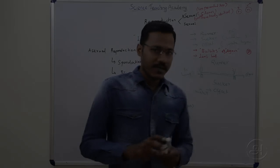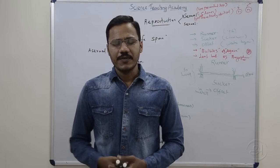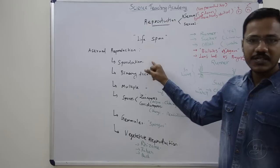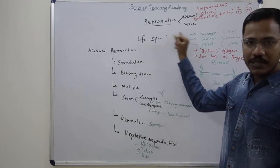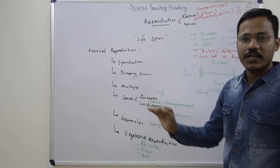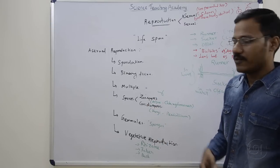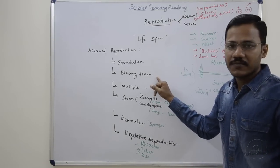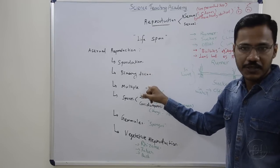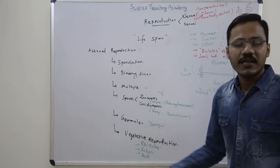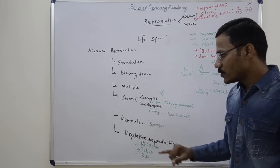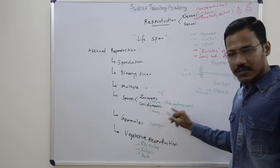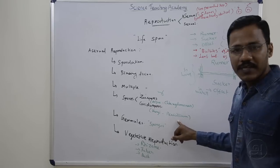This covers all vegetative reproductions of different types. Asexual reproduction is one of those. Binary fission and multiple fission are examples. From spores, there are many different types of asexual spores. One is zoospore and another is conidiospore. Zoospore is an example found in algae, specifically Chlamydomonas. Conidiospore is an example from fungi and Penicillium. And gemmules.